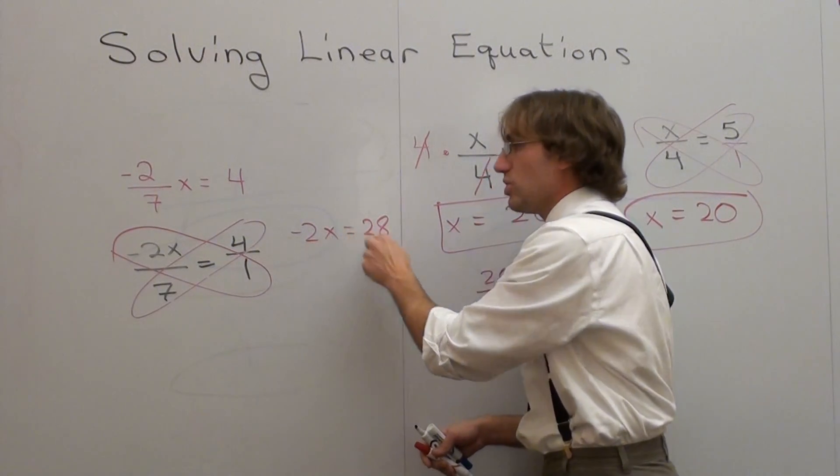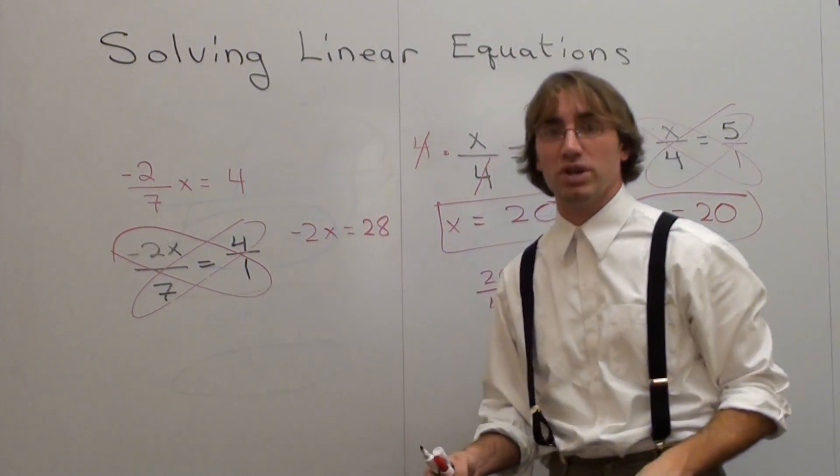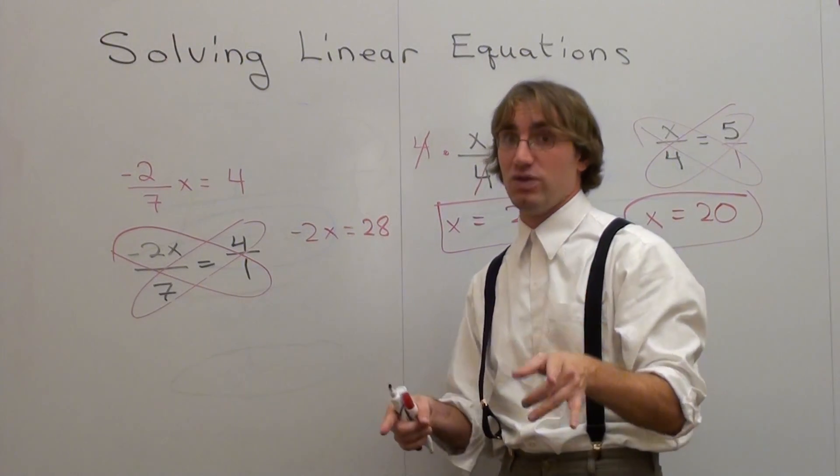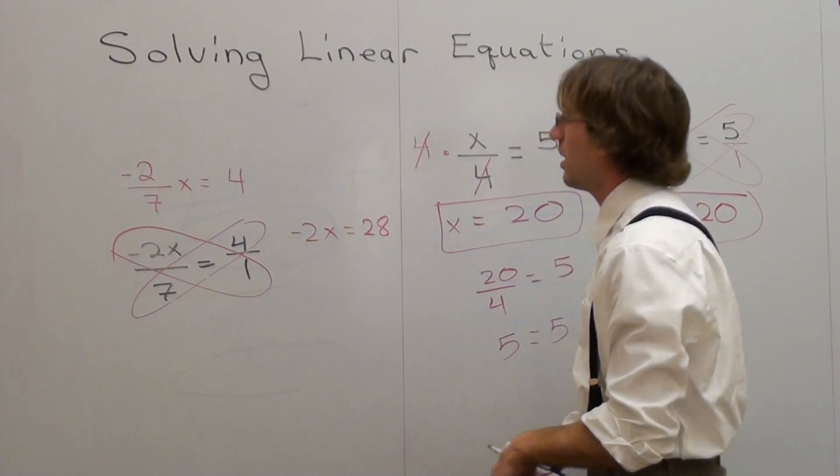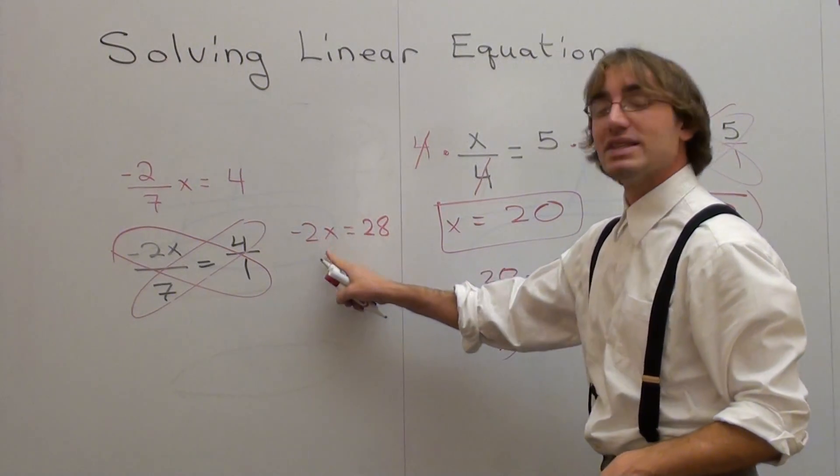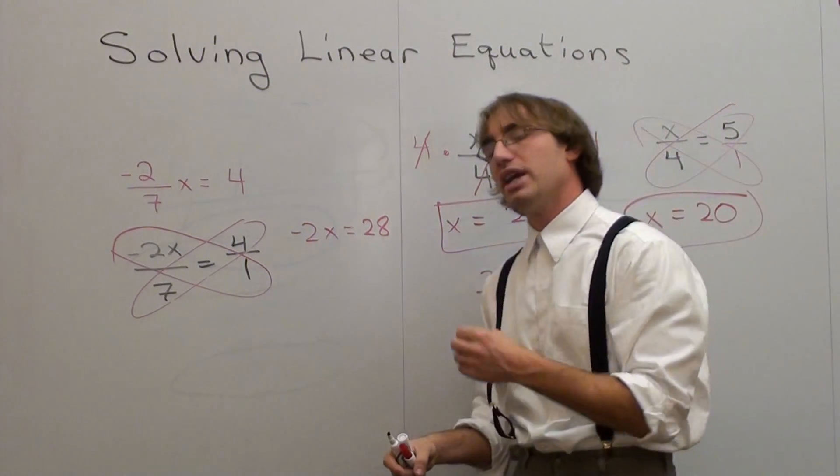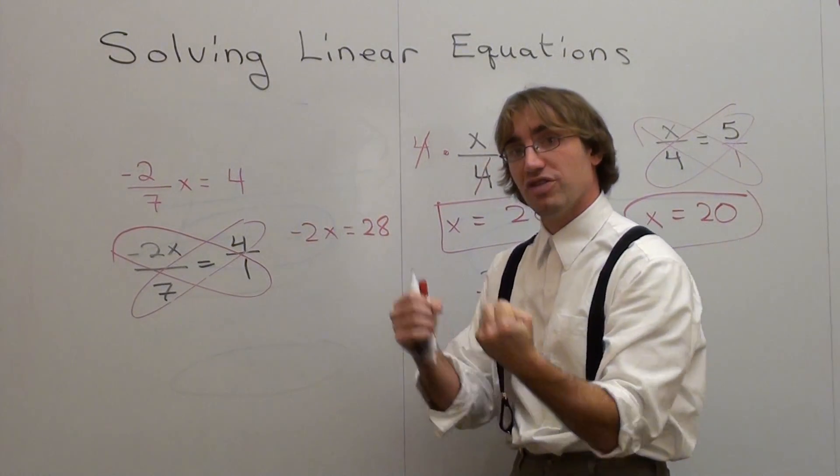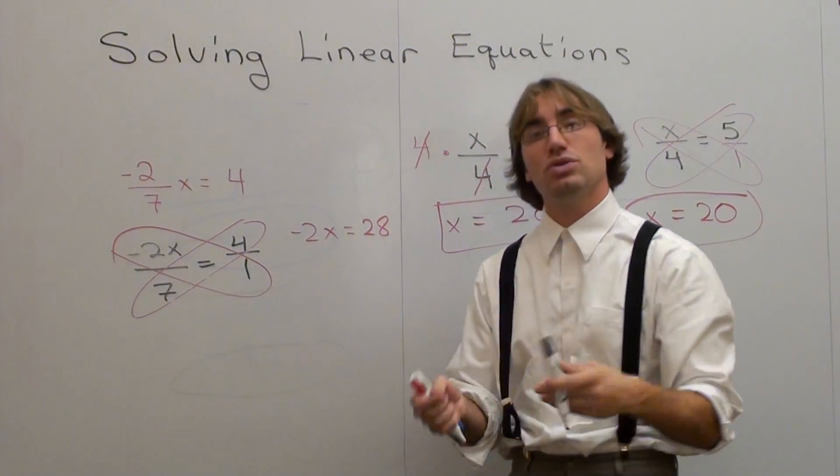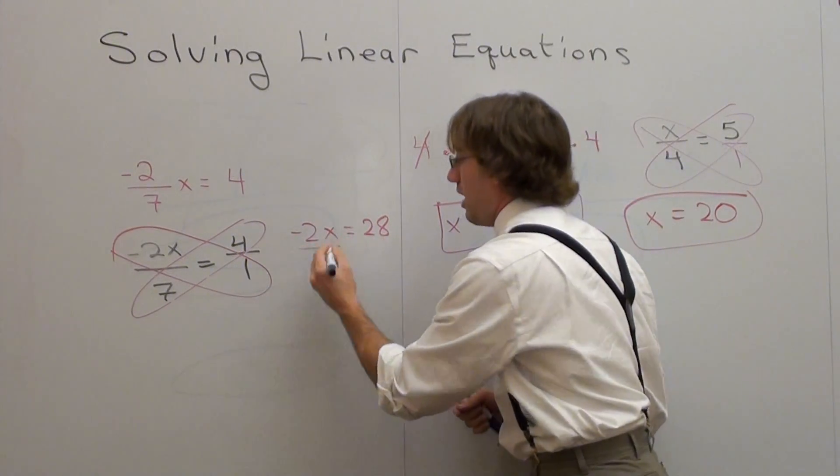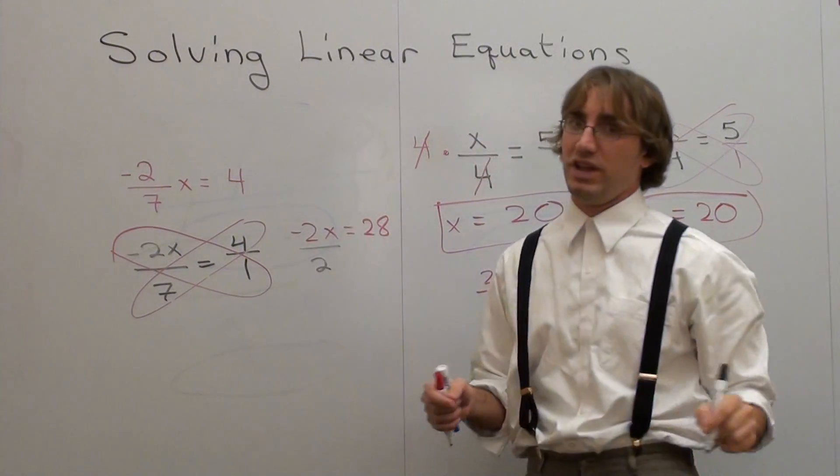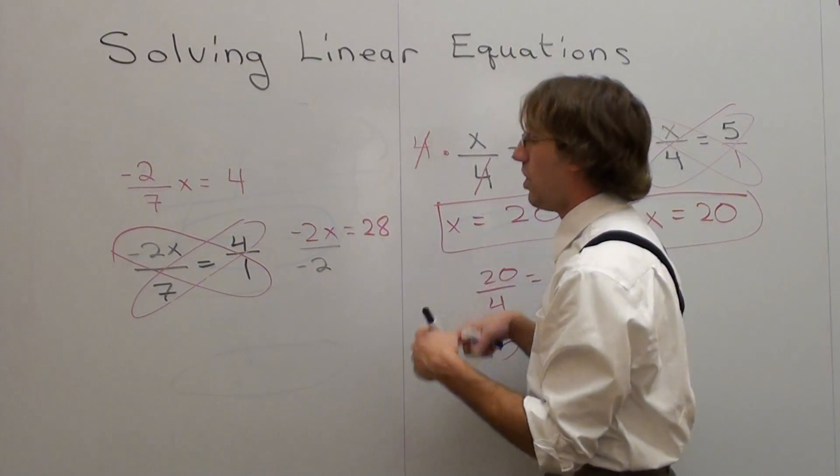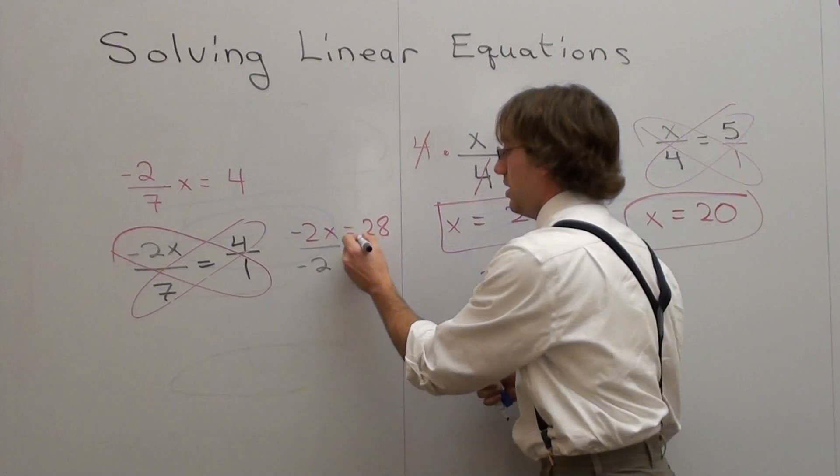Negative 2x equals 28. And don't forget your equals in between there. Don't neglect it, because you will probably end up getting it wrong if you neglect it. So I have negative 2 times x equals 28. How do I get rid of a multiplication in between a coefficient and a variable? I have to divide. Now, I can divide 2, but I won't get rid of the negative, so I have to divide by negative 2. But what I do on one side, I do on the other side.